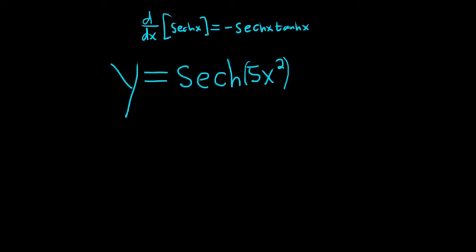So in this case, it's not just the hyperbolic secant. It's the hyperbolic secant of 5x squared. So we have an inside function, so we do have to use the chain rule.